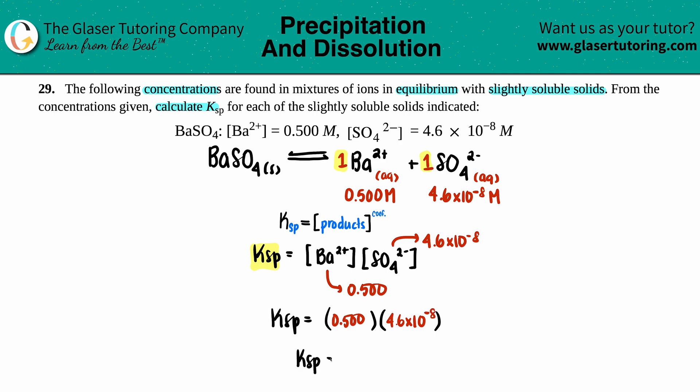Look how lovely that was - 0.5 times 4.6 times 10 to the negative 8... Yep, 2.3 times 10 to the negative 8. Ksp values have no units and we're done. Oh my goodness.